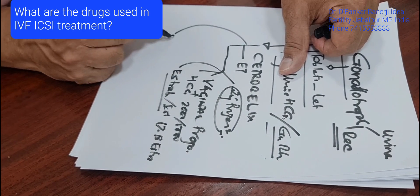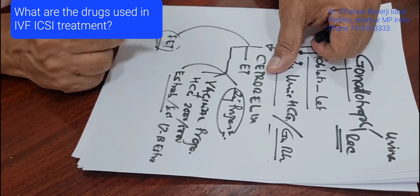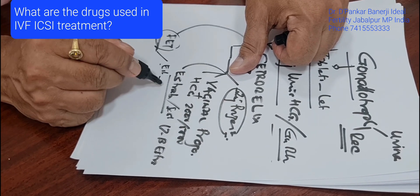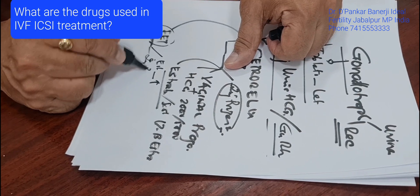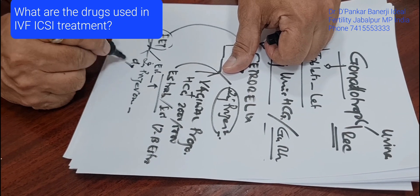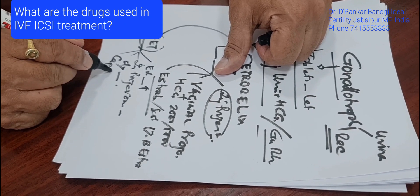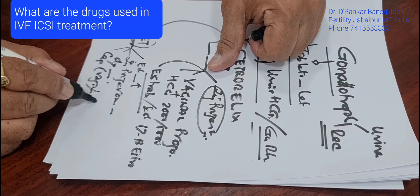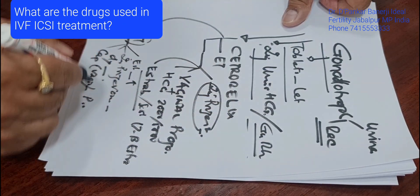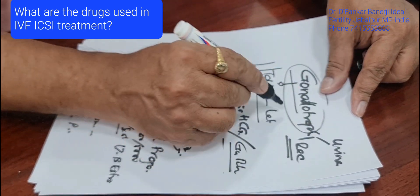If we go for FET — frozen embryo transfer — rather than fresh embryo transfer, we use Estradiol at a slightly higher dose, along with injectable progesterone, dydrogesterone, or vaginal capsules of progesterone. These are the drugs most commonly used in IVF.